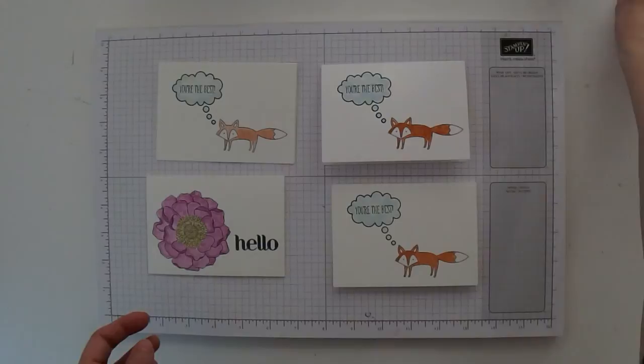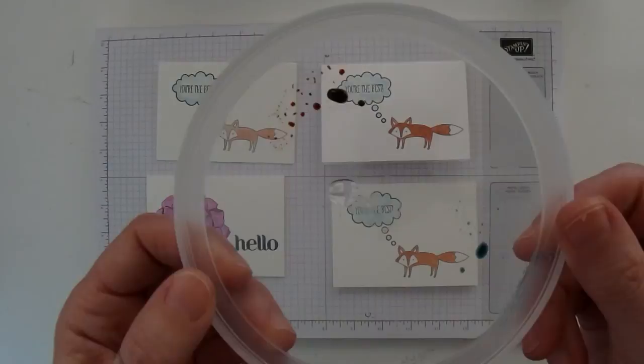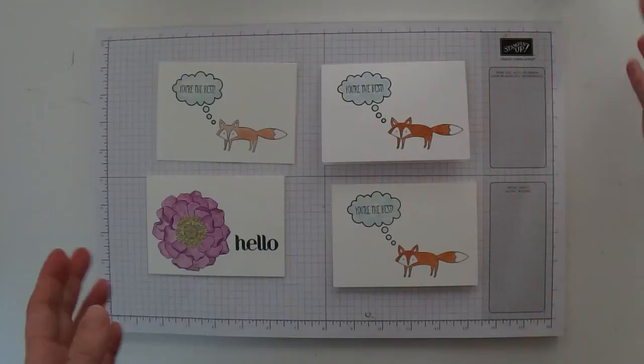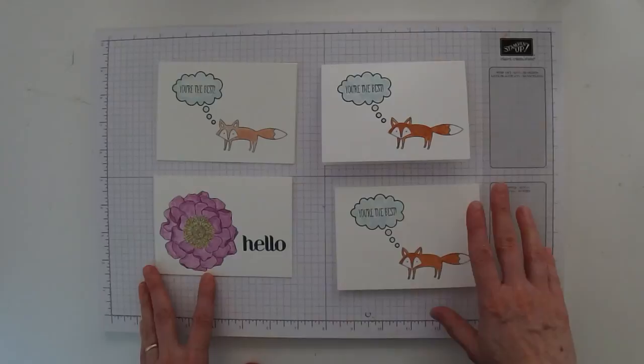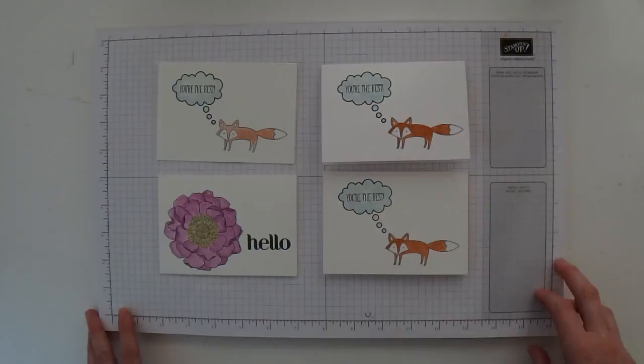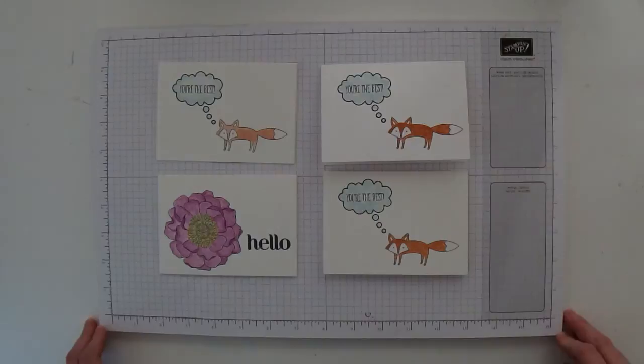The nice thing is you can use whisper white cardstock, you can use memento ink or Stazon, which is really nice. It's kind of a nice technique to try out. All the supplies you'll need to make these cards are available for purchase on my blog. I hope you've enjoyed this tutorial. Bye for now.